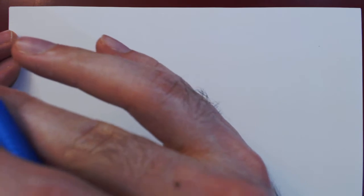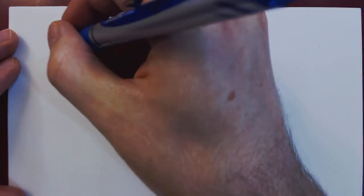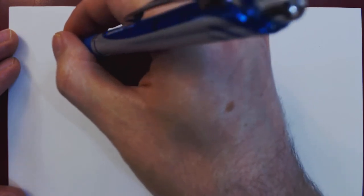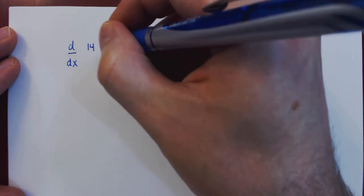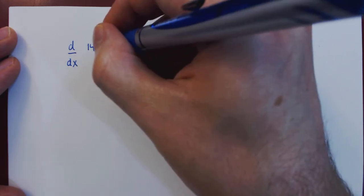Okay, so in this video we will give two examples of the constant multiple rule of differentiation. So suppose that we want to take the derivative with respect to x of the function 14 times the 7th root of x.